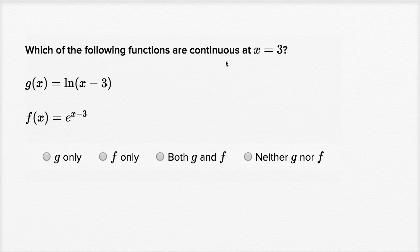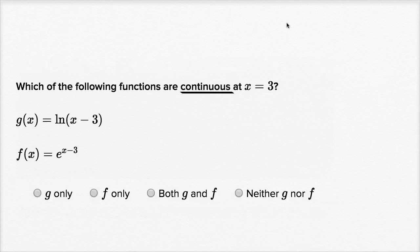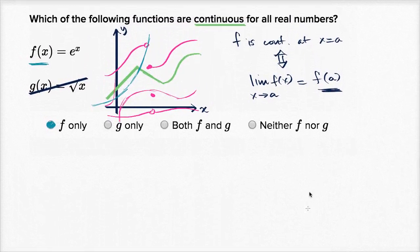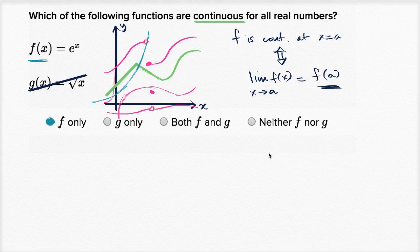Which of the following functions are continuous at x equals three? Well, as we said in the previous video, in order to be continuous at a point, you at least have to be defined at that point. We saw our definition of continuity: f is continuous at a if and only if the limit of f as x approaches a is equal to f of a.